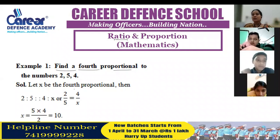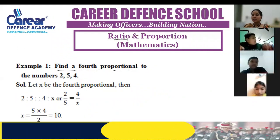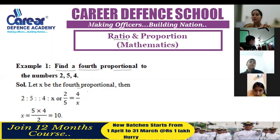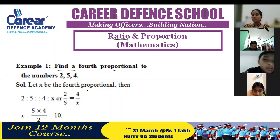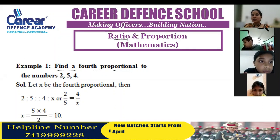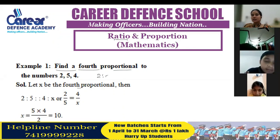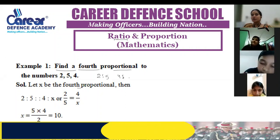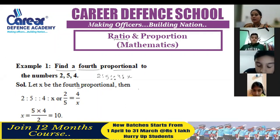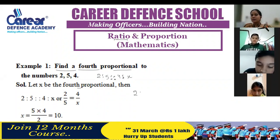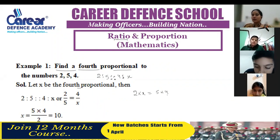How do you get out of it? I had told you a property: in proportion, the product of means is equal to the product of extremes. So we have two and three numbers. We will write ratio 2 to 5 and 4 to proportion; we will take x. The property gives us: 2 into x is equal to 5 into 4.